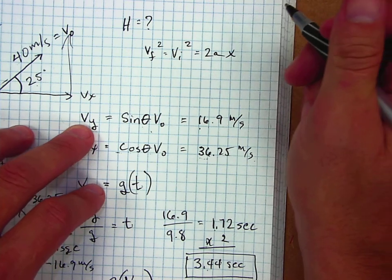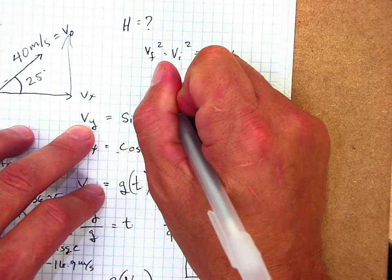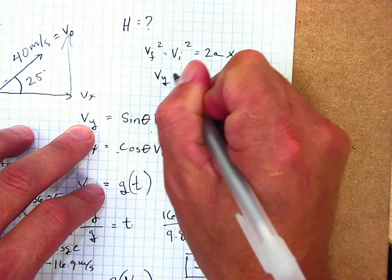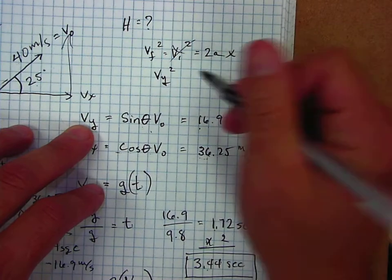I'm going to clean it up for v_y sake. I'm going to say the v_y square. I can get rid of one of these because it's going to go to zero.